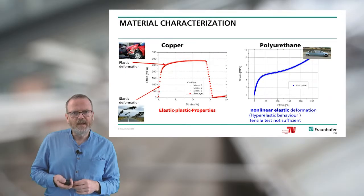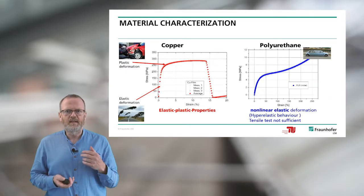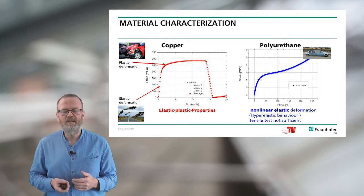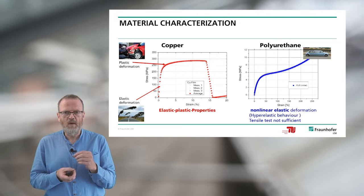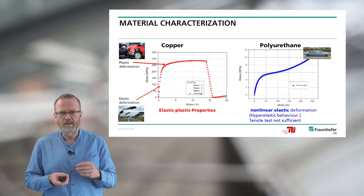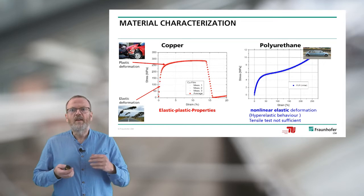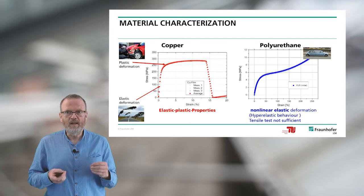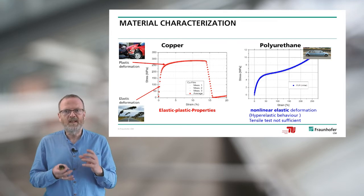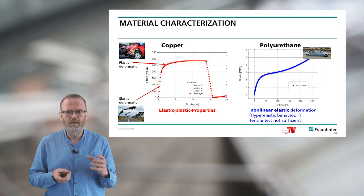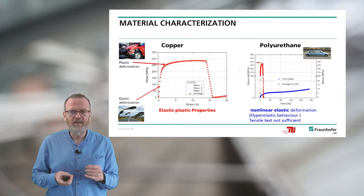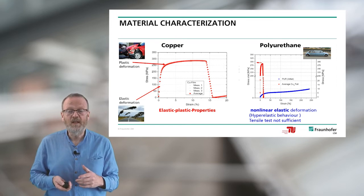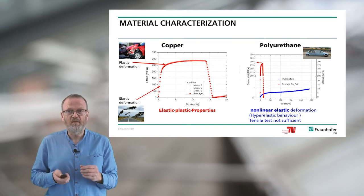On this slide you see some results. On the left side, the red curve is a typical curve for copper, showing elastic-plastic properties. The first part of this curve is the elastic behavior and the second part is the plastic behavior. On the right side you see the very long-stretched material — a non-elastic deformation from polyurethane — which shows hyper-elastic behavior. If you compare both materials, the red curve for copper and the blue curve for polyurethane, you can see the quite different material properties.